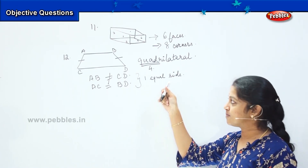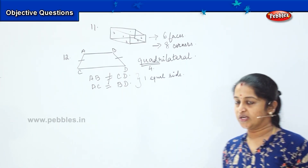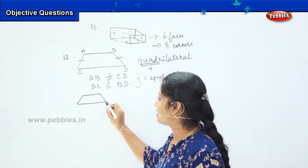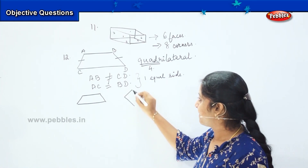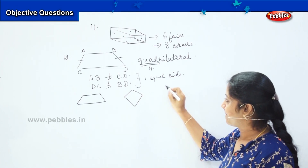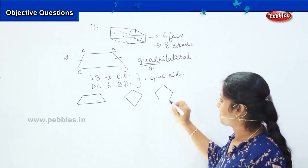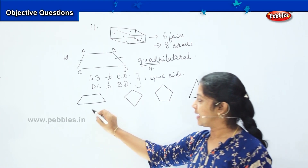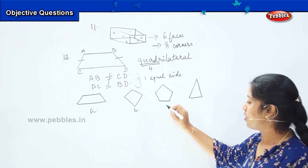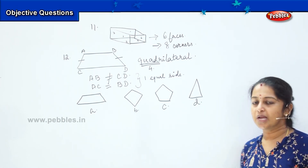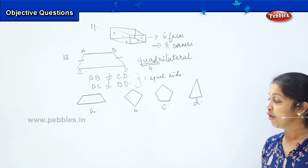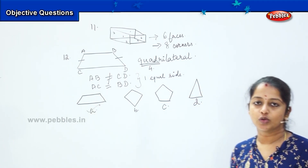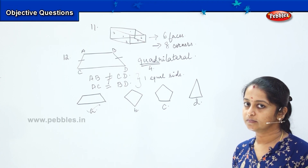Keeping this basic point in mind, here comes your next question. You have to identify which among these is a quadrilateral — is it option A, B, C or D? You are correct. Option A is a quadrilateral because it is a rectangle form with 4 sides having one pair of sides equal. Is it clear?